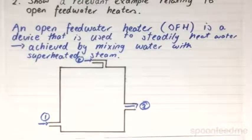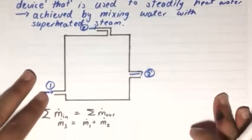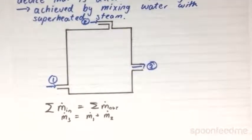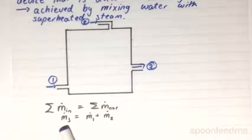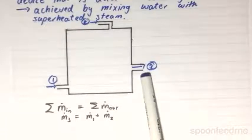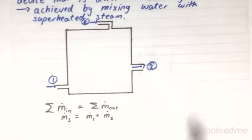Recall that we are analyzing steady state, steady flow situations. So the total mass flow rate in has to equal the total mass flow rate out. Therefore, it follows that m3 dot is going to equal the sum of m1 dot plus m2 dot.